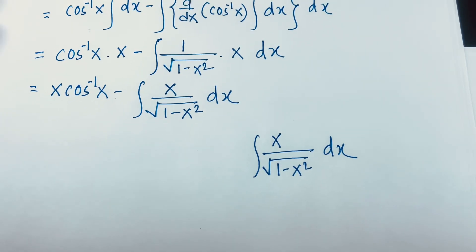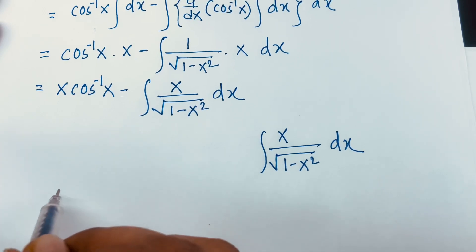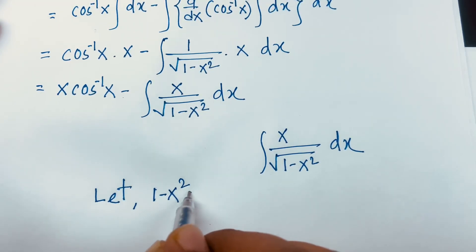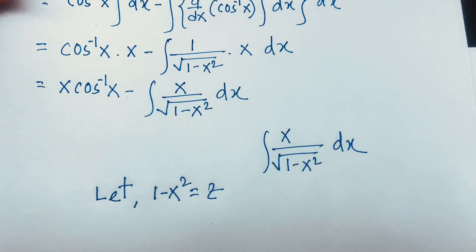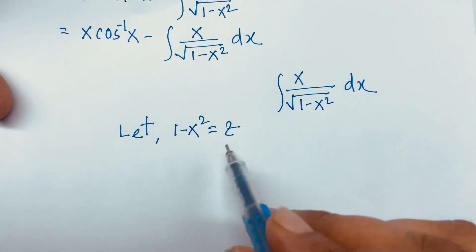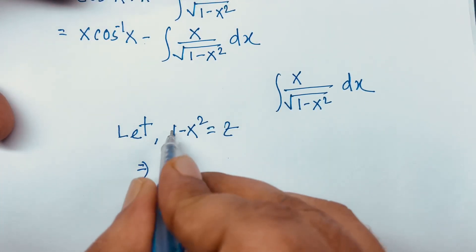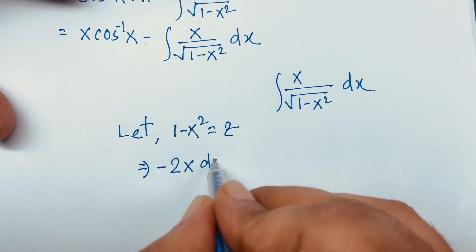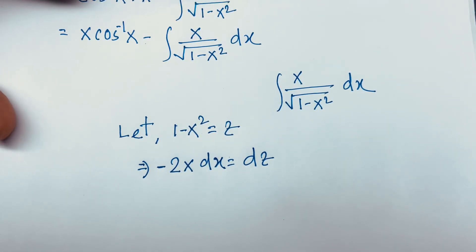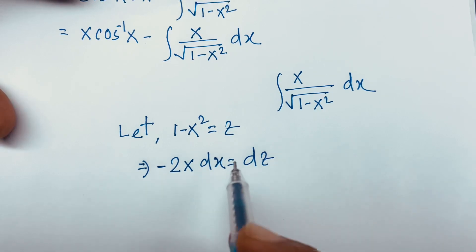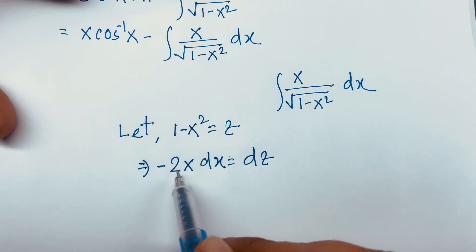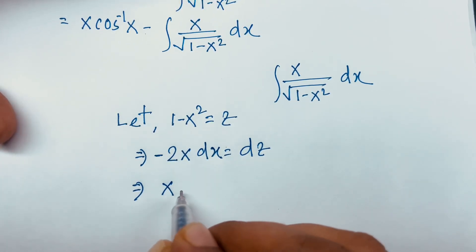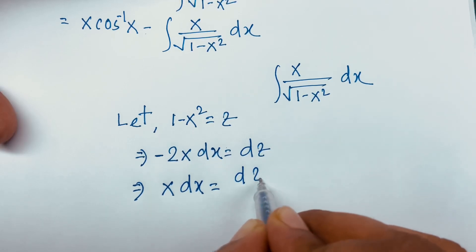So we let 1 minus x squared equal to z. Derivative of 1 is 0, and minus x squared gives minus 2x dx, which equals dz. So x dx will be dz over minus 2.